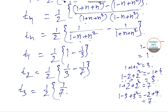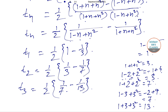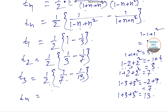T₃ = ½[1/(1−3+3²) − 1/(1+3+3²)]. First bracket: 1−3+9 = 7, so 1/7. Second bracket: 1+3+9 = 13, so 1/13. Therefore T₃ = ½[1/7 − 1/13]. In general, Tₙ = ½[1/(1−n+n²) − 1/(1+n+n²)].